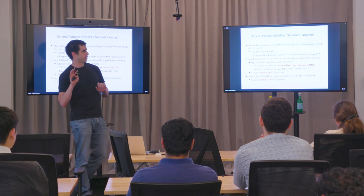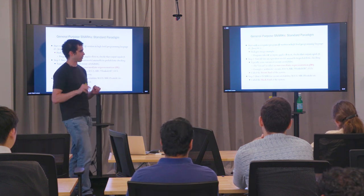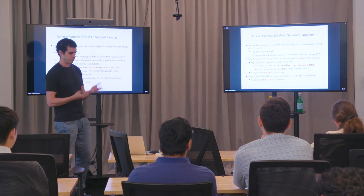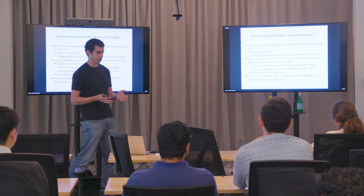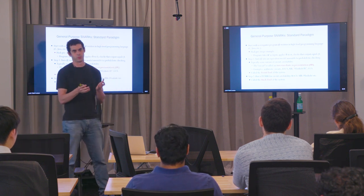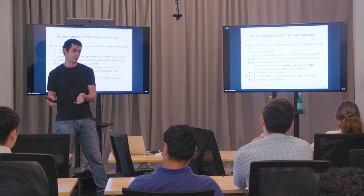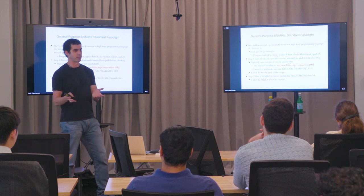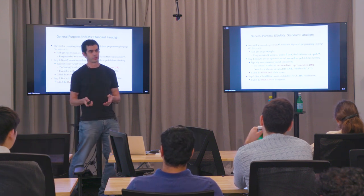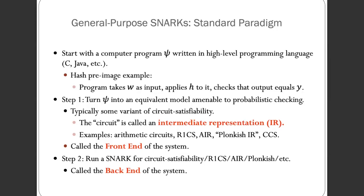To summarize: most SNARKs are deployed in a two-step process. First, you turn the witness-checking procedure into an equivalent circuit. Then the prover proves with a SNARK backend that it knows a satisfying assignment to that circuit. Together, the prover actually proves that it knows a witness that the computer program would have accepted.